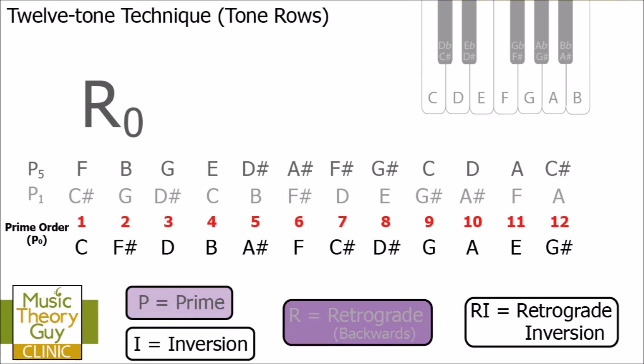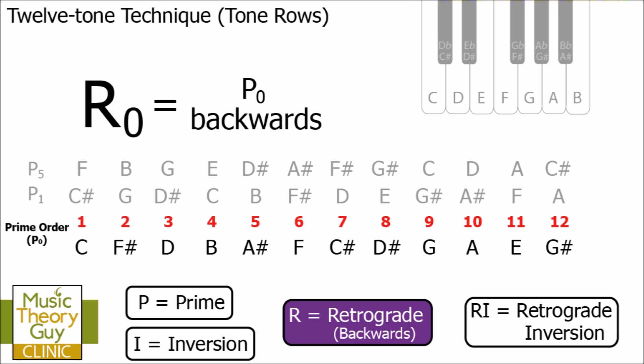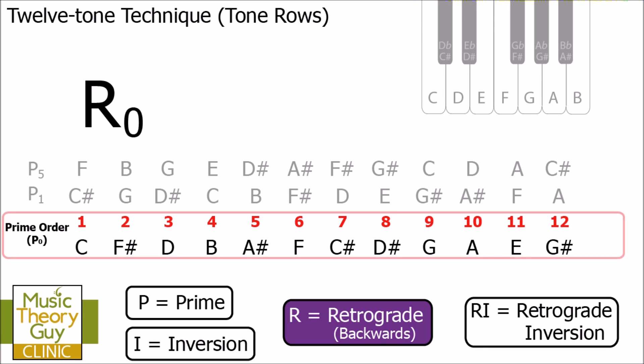So, let's now have a look at retrograde rows. Retrograde rows use that letter R. And as I've already said, retrograde is another way of saying backwards. So, R-0, all that is, is P-0 backwards. R-1 is just P-1 backwards. R-5 would be P-5 backwards. So, let's have a look at R-0. And as I say, all it is, is P-0 backwards.